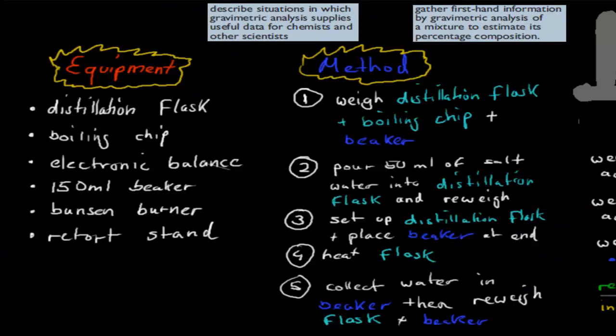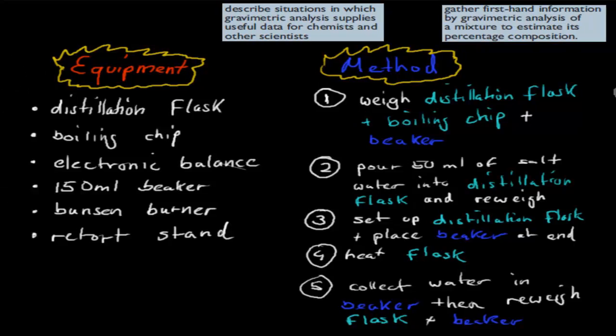And what I'll go over next is your first investigation. So what you've done in this investigation is, first you would have had a distillation flask. In that distillation flask, you would have put boiling chips into it. You had an electrical balance, this is all your equipment. You would have had a 150 ml beaker, a Bunsen burner, and a retort stand. And a couple of other things, but these are the most important parts.